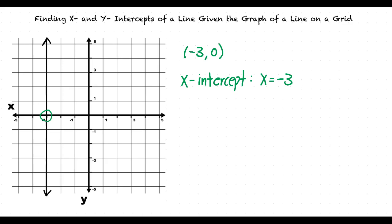To find the x intercept of a graph, we will find the x value of a point at which the line crosses the x axis. To find the y intercept of a graph, we will find the y value of the point at which the line crosses the y axis. A horizontal line will only have a y intercept, and a vertical line will only have an x intercept.